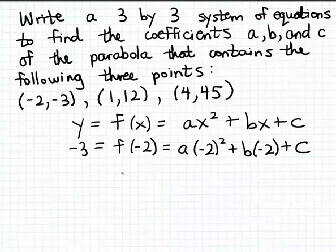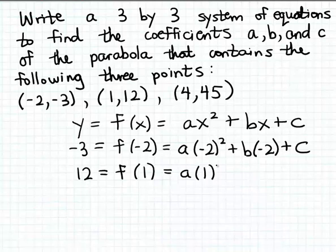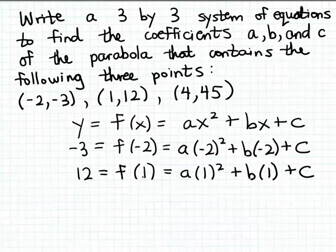If we repeat the same process for the other two points — substituting the x coordinate for x and the y coordinate for y in our formula — we'll get two other equations containing the unknowns a, b, and c. Altogether, we'll have three equations. Here's the second equation: f(1) must equal 12, and f(1) according to our formula is a times 1 squared plus b times 1 plus c, equal to 12.